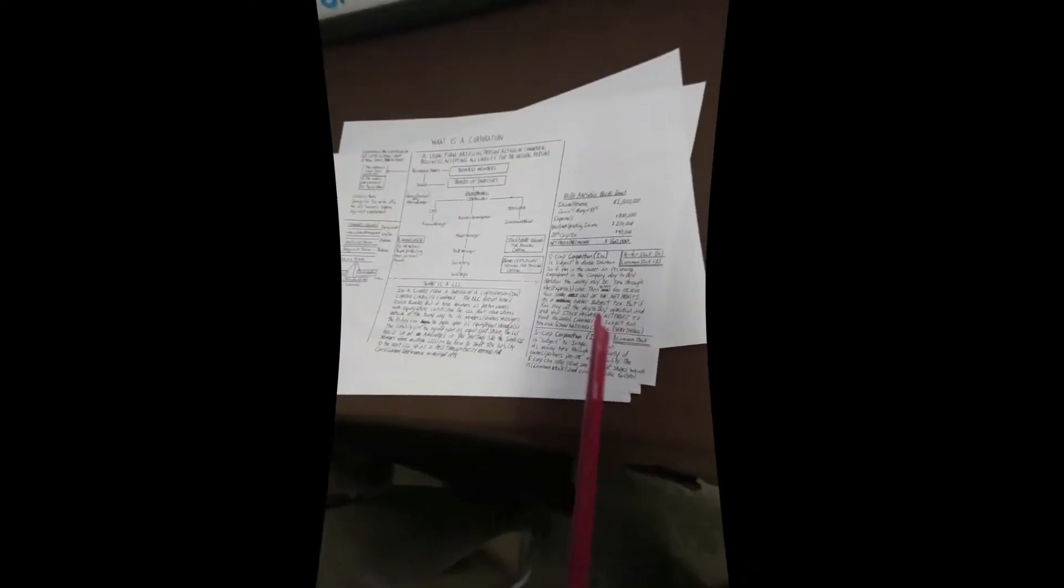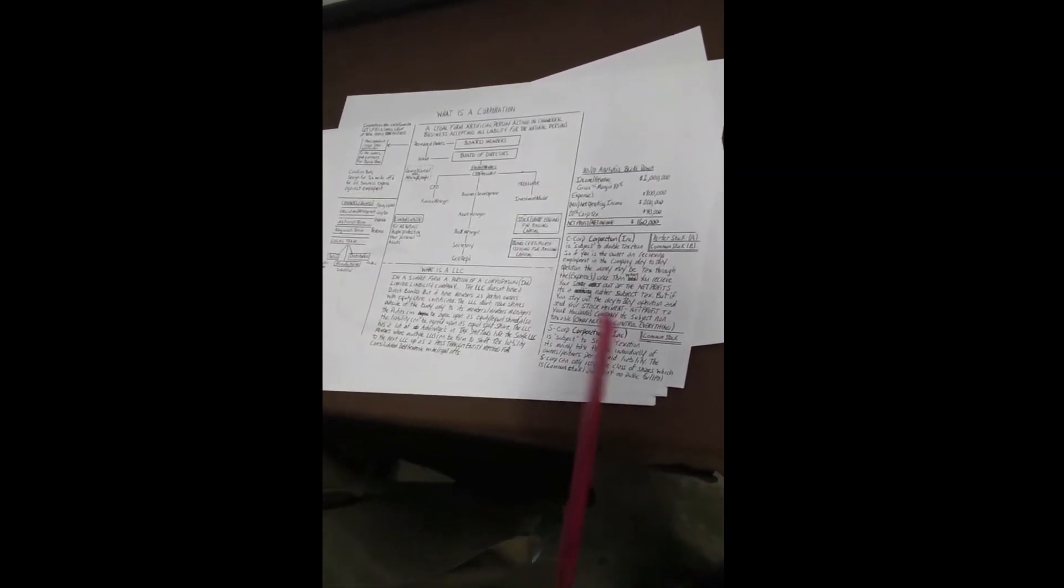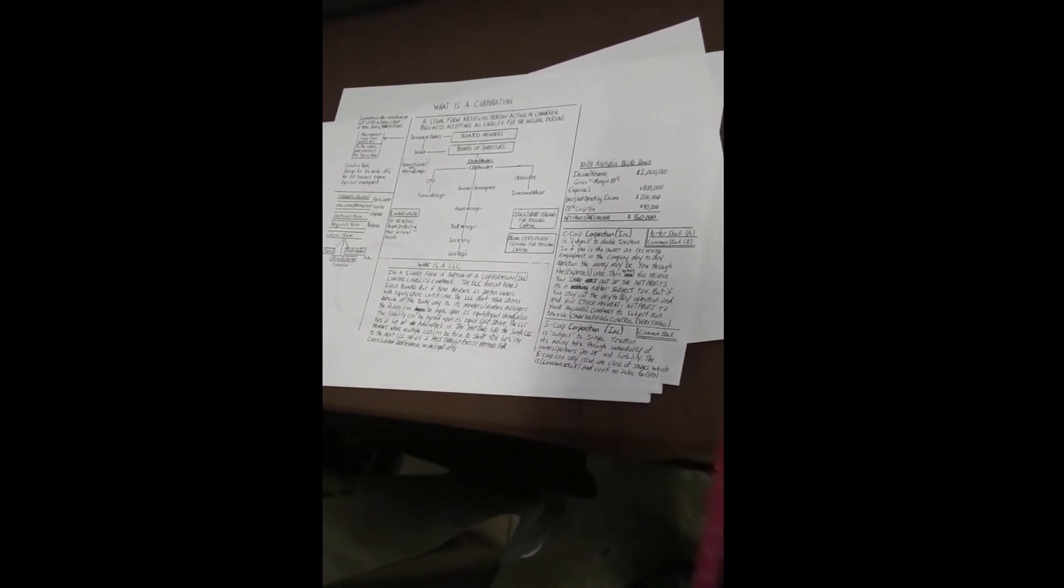The S-Corp thing is only issued common stock. It's subject to single taxation. It's mainly taxed you individually of ownership partners perceived by liability. The S-Corp thing is only issued one class of shares which is common stock and can't go public for IPOs.